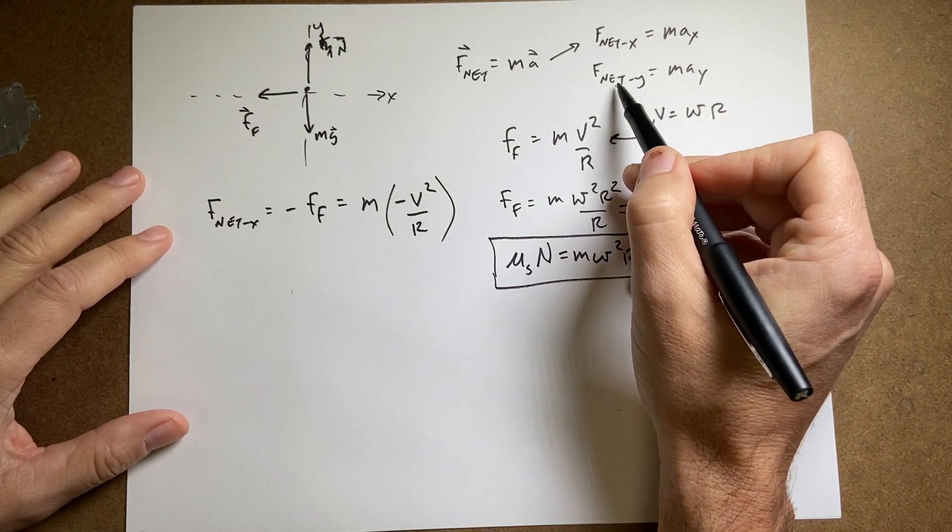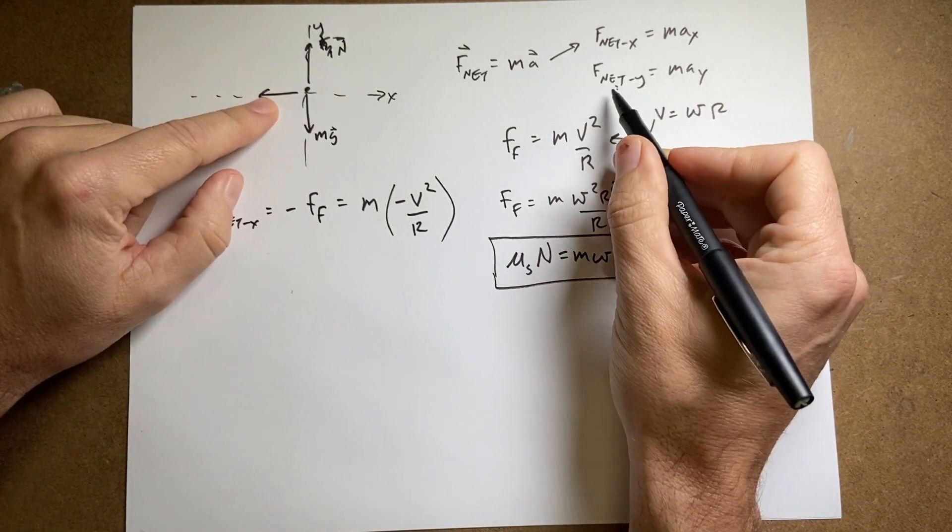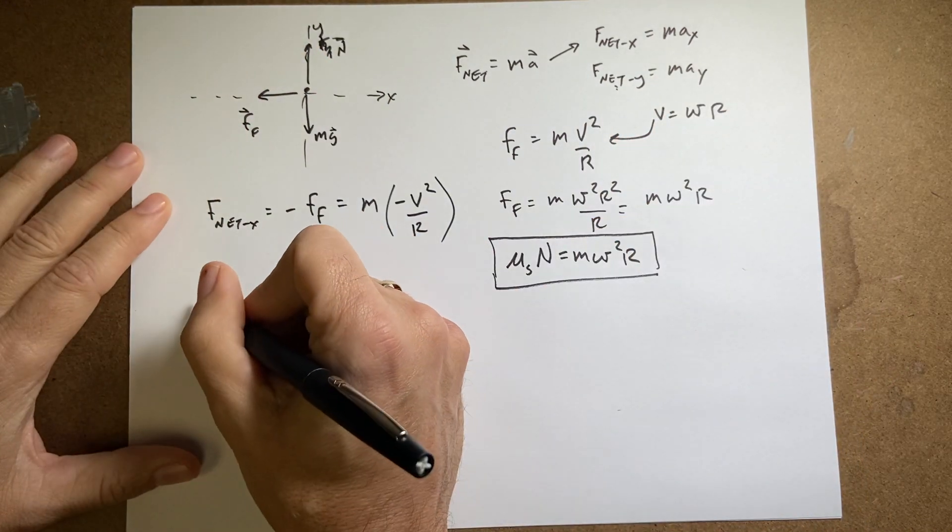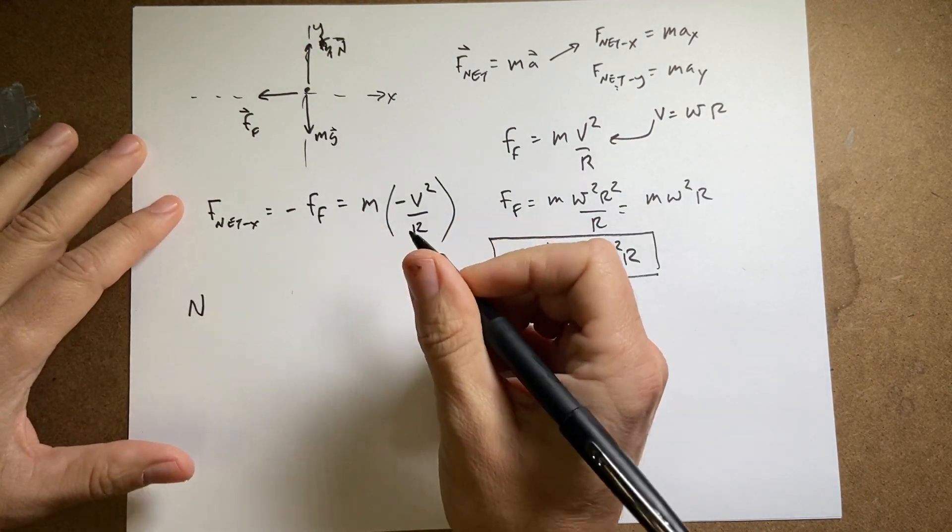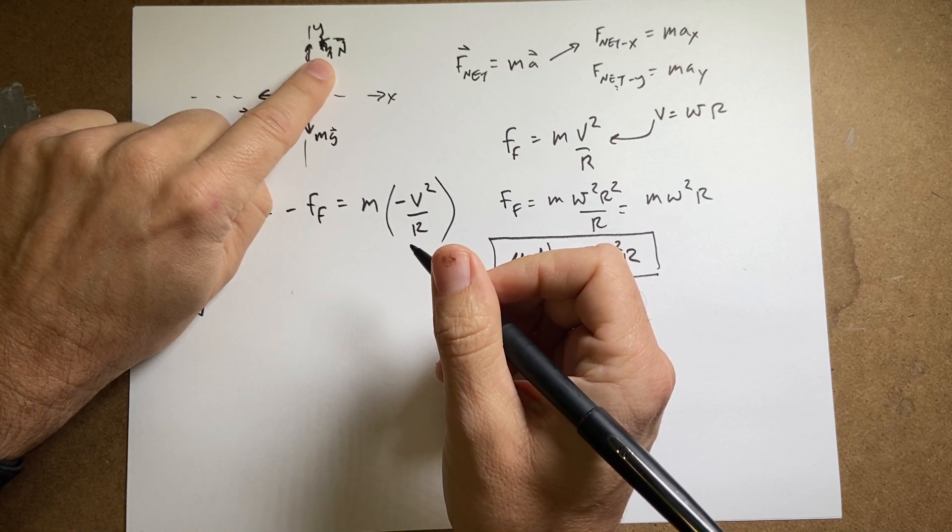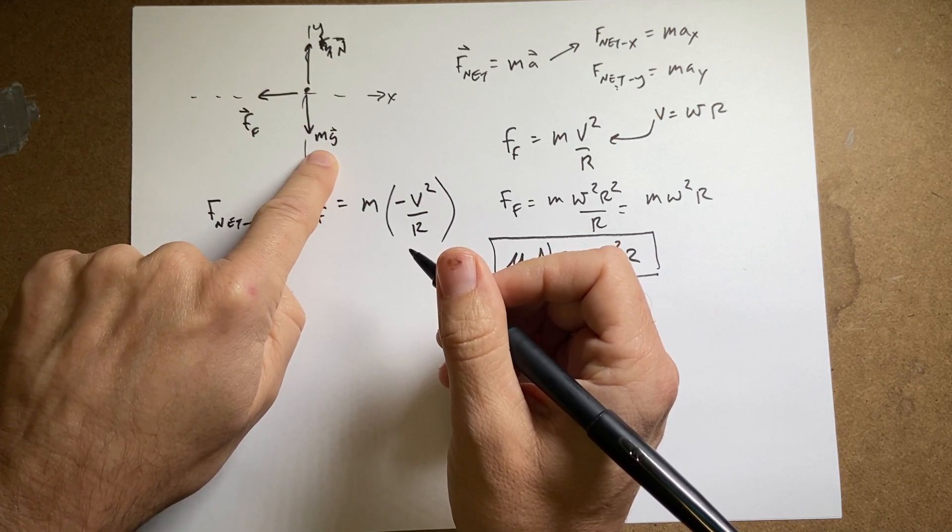Now let's go to the y direction. What forces are in the y direction? Well, I have the normal force pulling up, n. It has a positive component because it's in the positive y direction. And then I have the weight, mg, in the negative y direction.